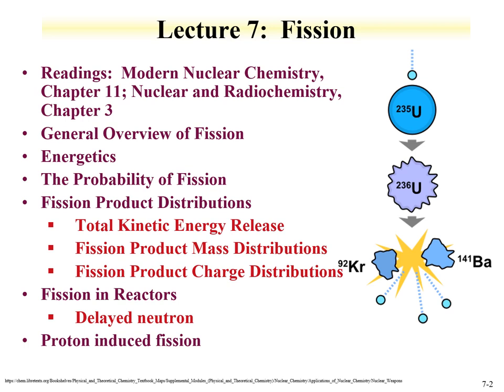The readings for this lecture are Chapter 11 from Modern Nuclear Chemistry and Chapter 3 from Radiochemistry. The lecture covers a general overview of fission. We'll discuss the energetics related to fission — energy from fission is much greater than the other decay processes we've discussed. We'll talk about the probability of a fission process occurring.